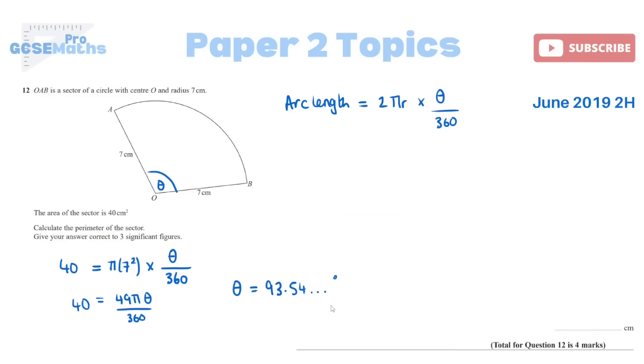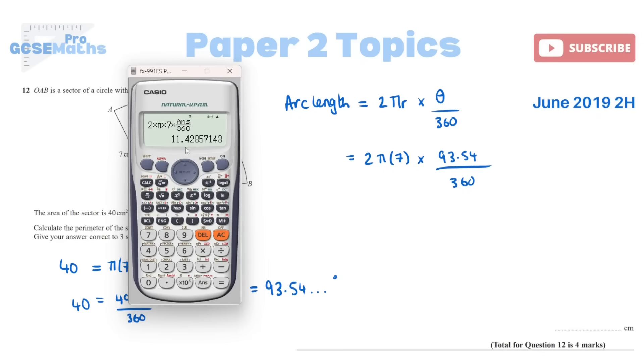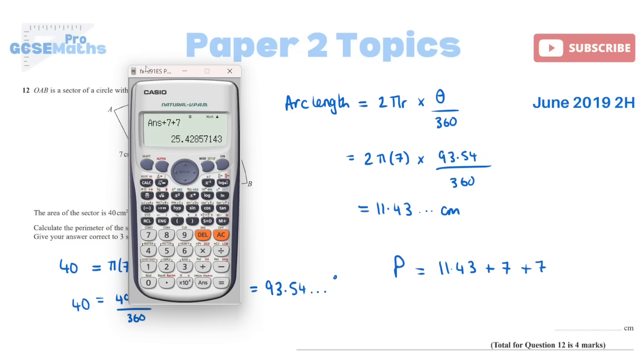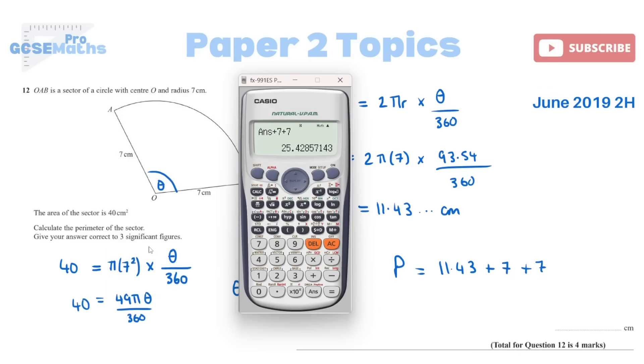Because it's not the end of the question I am going to keep my decimal answer in my calculator, but I now know the angle, so we can put it into the arc length formula. That would be 2 times pi times the radius, which is 7, times by the angle 93.54 over 360. So for the arc length I get 11.43 centimetres. Now don't forget though that the whole thing was the perimeter. So the perimeter would be the arc length plus the other two sides, which are both a radius. Now this is my final answer. They want it correct to three significant figures so that would be 25.4.